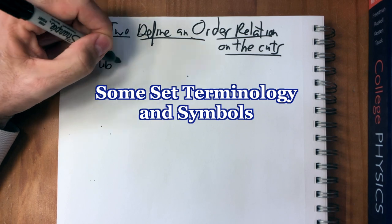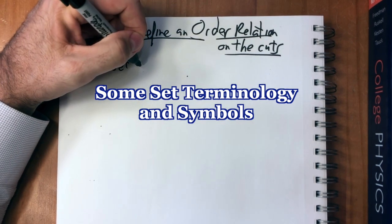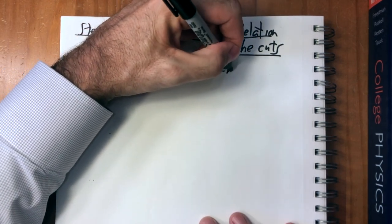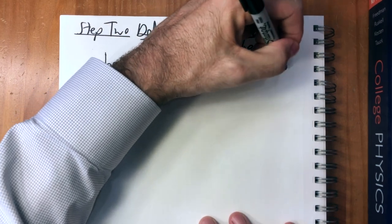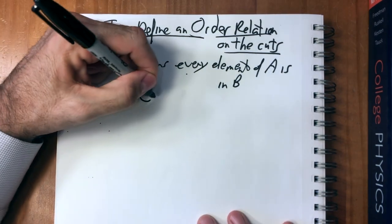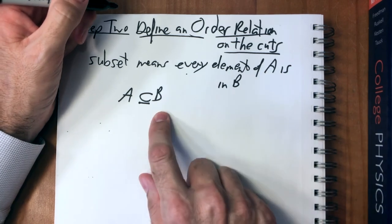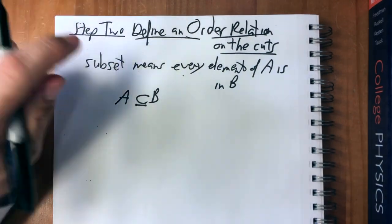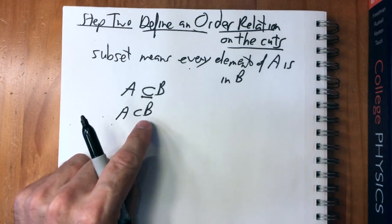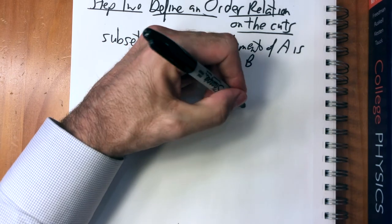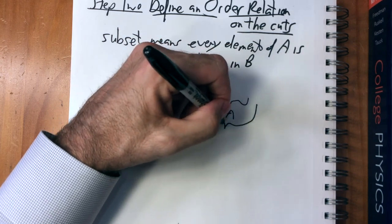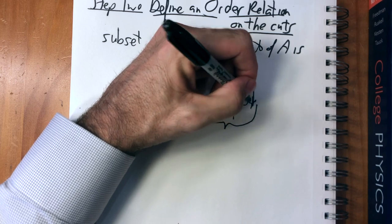A subset means that every element of A is in B. If A is a proper subset of B, it means there is some element of B that's not in A. So if we have A here and B here, there's going to be something in B that's not in A.